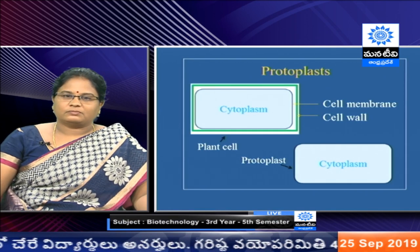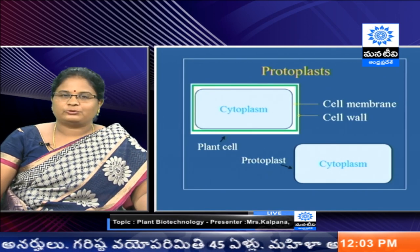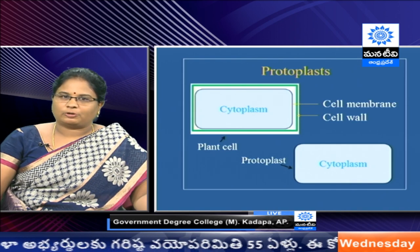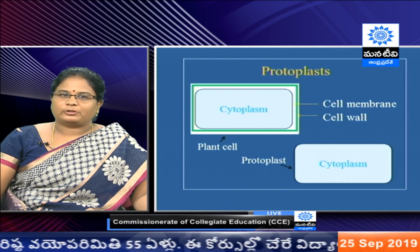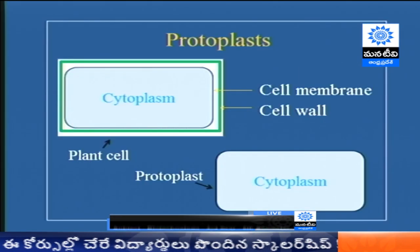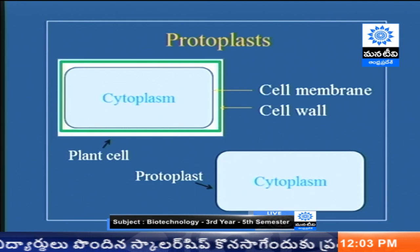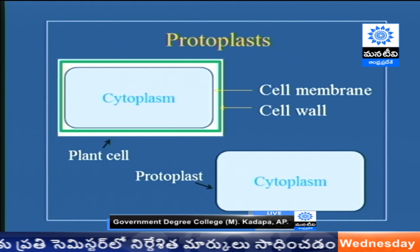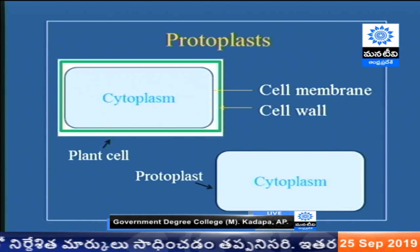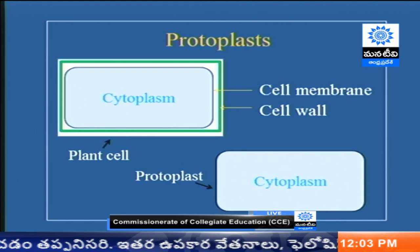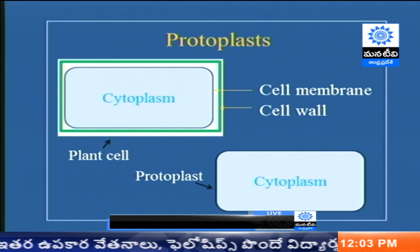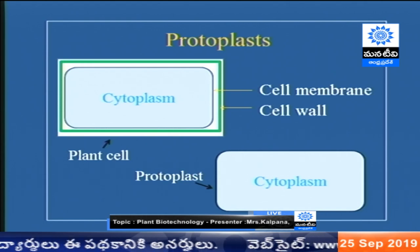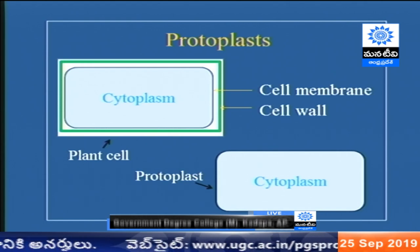Transformation without regeneration, or regeneration without transformation, is of no value. We need transformation, and from the transformed cell we have to develop the plant — that is the final aim of transgenic plant production. Today we have many types of target cells for transformation. Our topic is how to produce a transgenic plant using the protoplast. A protoplast is a plant cell without a cell wall — surrounding the cytoplasm, only the cell membrane or plasma membrane is present.